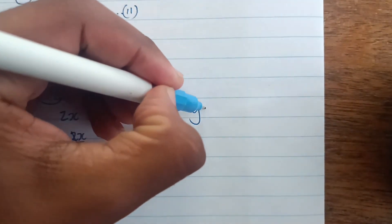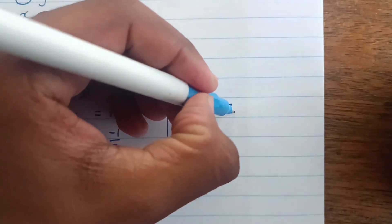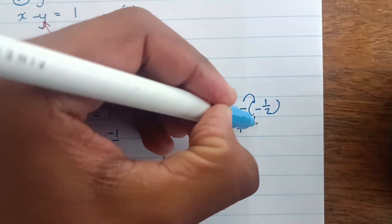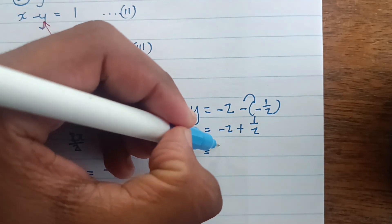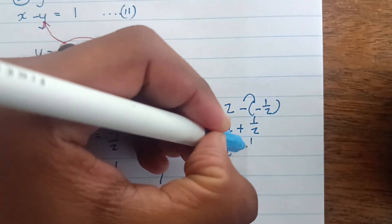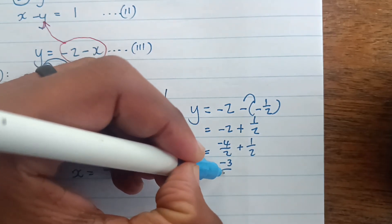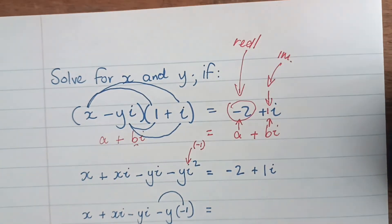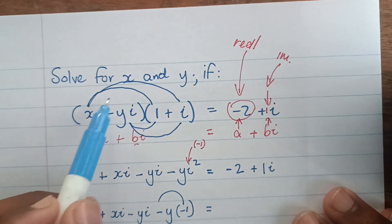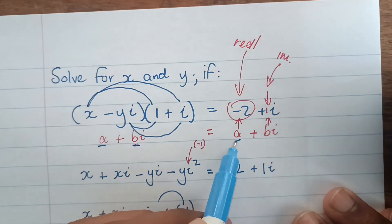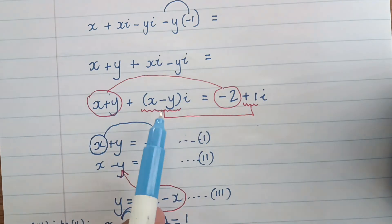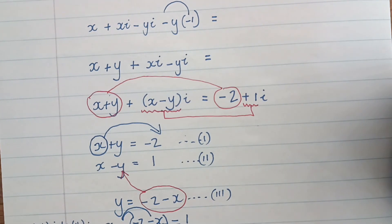Substituting x = −1/2 back into equation three: y = −2 − (−1/2) = −2 + 1/2 = −4/2 + 1/2 = −3/2. So x = −1/2 and y = −3/2. To recap: get both sides into rectangular form, then set real equal to real and imaginary equal to imaginary, and solve simultaneously.